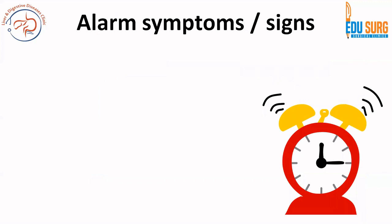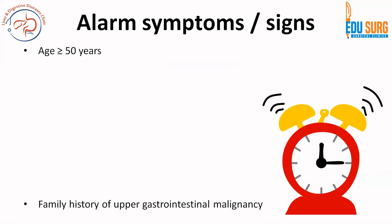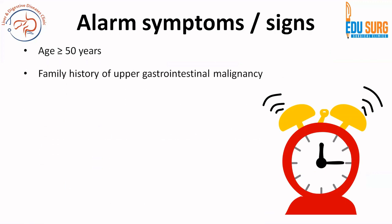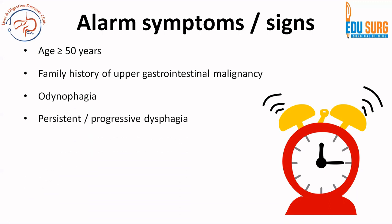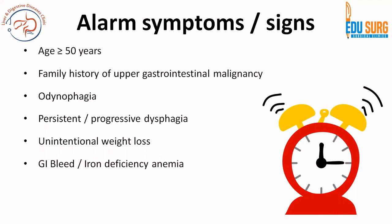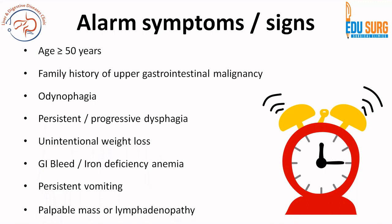Not all patients with GERD need endoscopy or pH monitoring. Alarm symptoms are very important to elicit in the clinic because if present, the patient warrants an endoscopy. These include: age over 50, especially with a family history of upper GI malignancy; odynophagia; persistent or progressive dysphagia despite treatment; unintentional weight loss; GI bleed in the form of hematemesis, melena, or occult blood in stool; iron deficiency anemia; persistent vomiting; and a palpable mass or lymphadenopathy. These alarm features point toward malignancy and warrant urgent upper GI endoscopy and/or imaging.